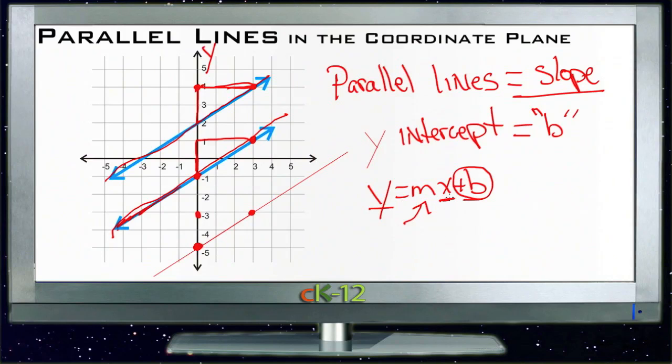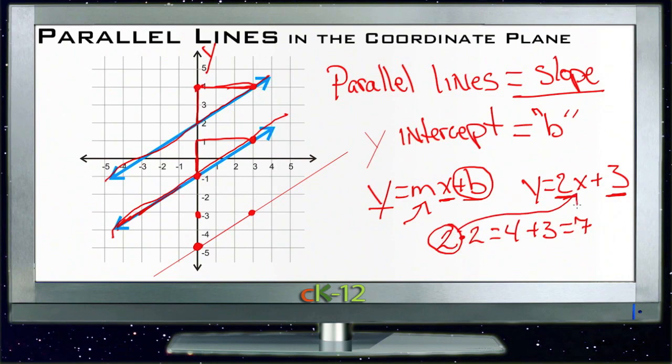So for instance, say I had an x-coordinate of 2 and my equation, my line was y equals 2x plus 3, so the slope was 2 and the y-intercept was 3. Then I just take the x value that I was given, the 2, and I'd multiply it by 2 which would give me 4, and then I'd add 3 which would give me 7.